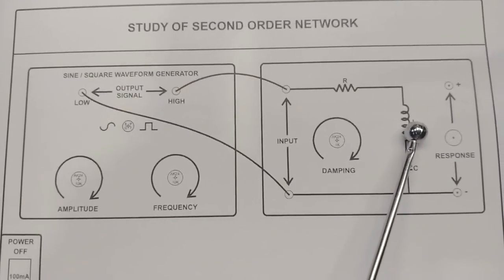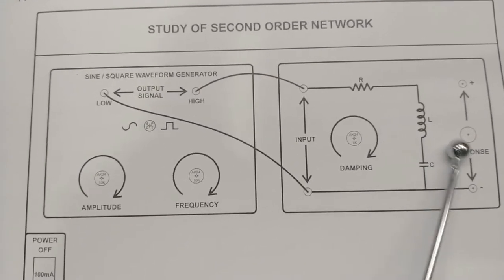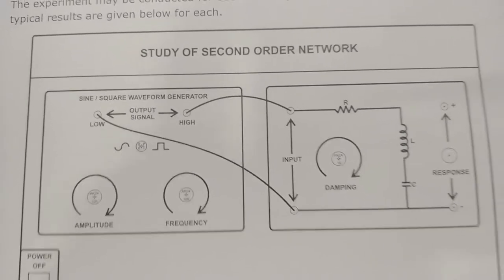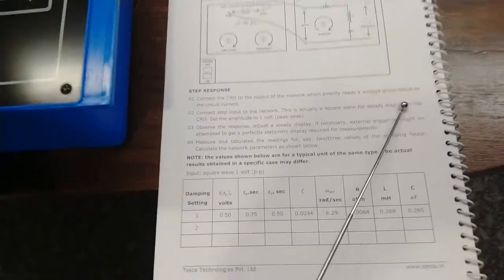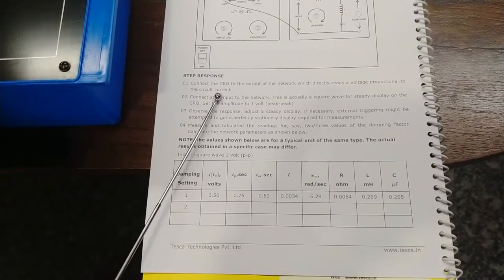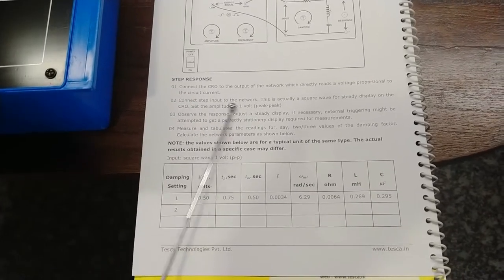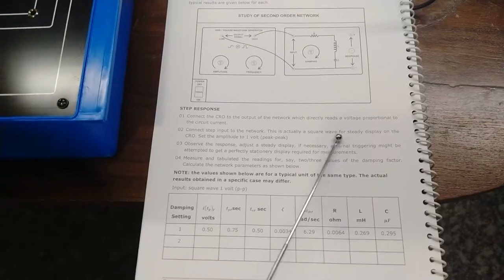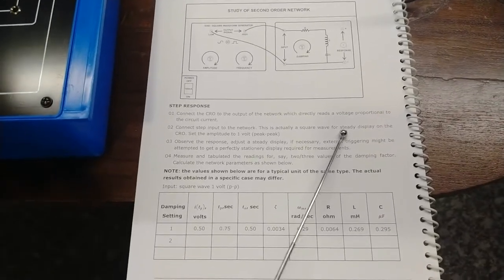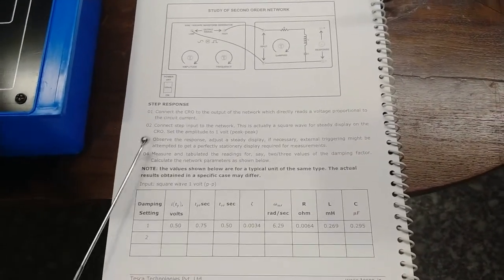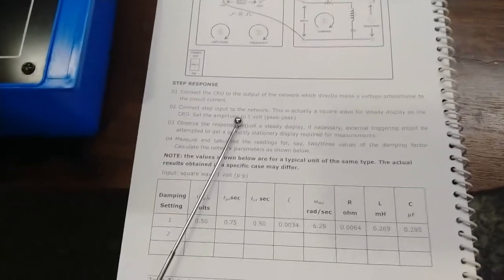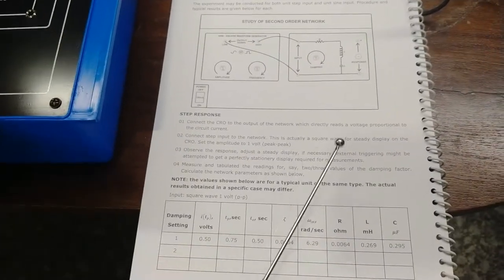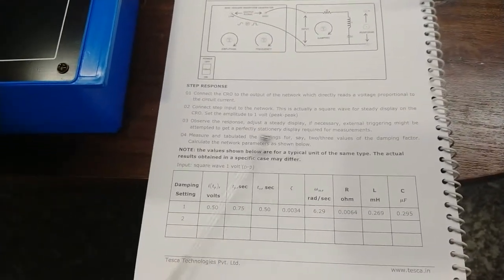We will use a BNC-to-BNC cable as the BNC connector provided on the front panel, and observe the response on the CRO. We connect the CRO output to the network, which directly reads the voltage proportional to the circuit current, and connect the step input to the network — this is actually a square wave. We select the square wave from our signals and set the amplitude to 1 volt peak to peak.